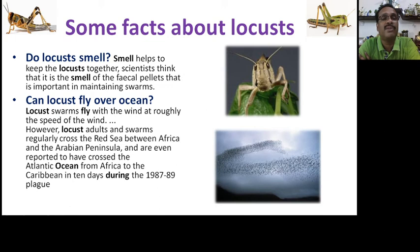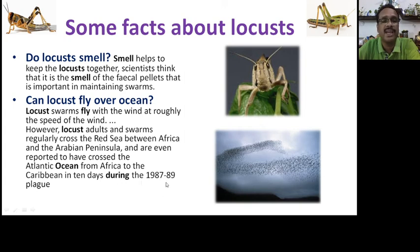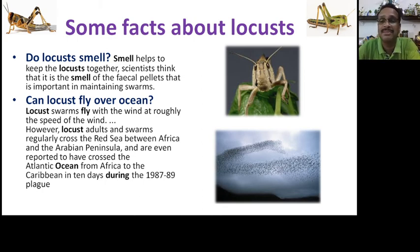Can locusts fly over oceans? Yes. Locust adults and swarms fly directly across the Red Sea between Africa and the Arabian Peninsula. They are even reported to have crossed the Atlantic Ocean from Africa to the Caribbean in just 10 days during 1987 to 1989 — much like migratory birds, these tiny insects can travel thousands of kilometers across any ocean.